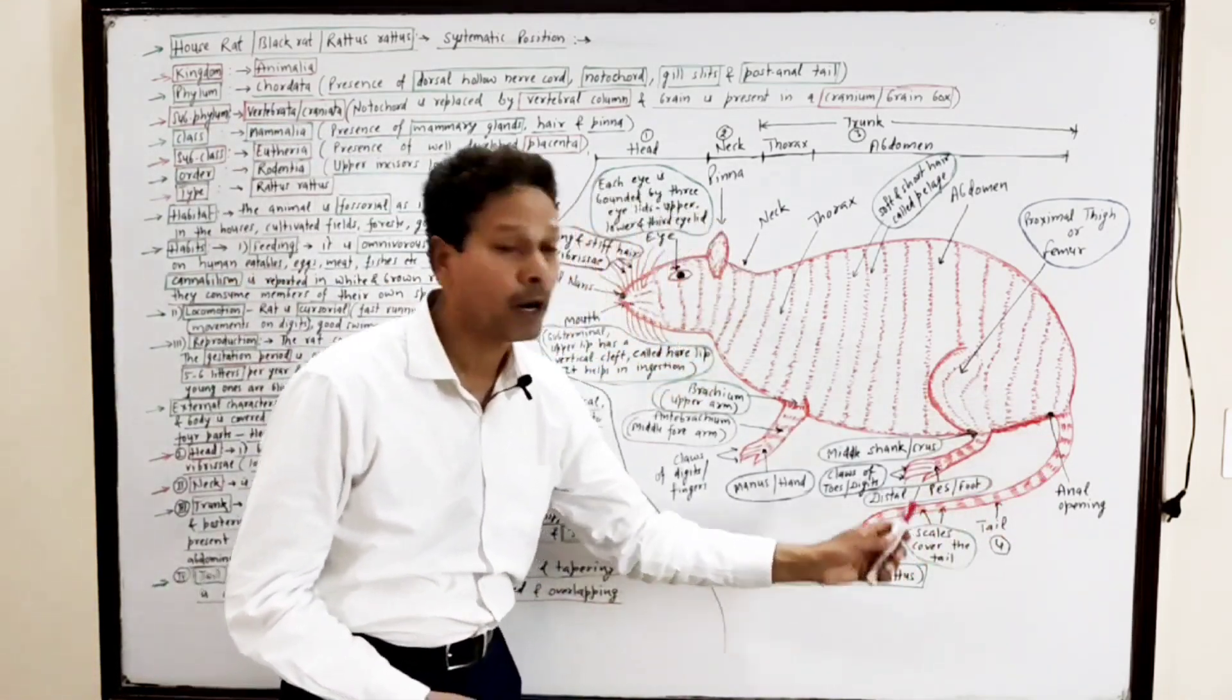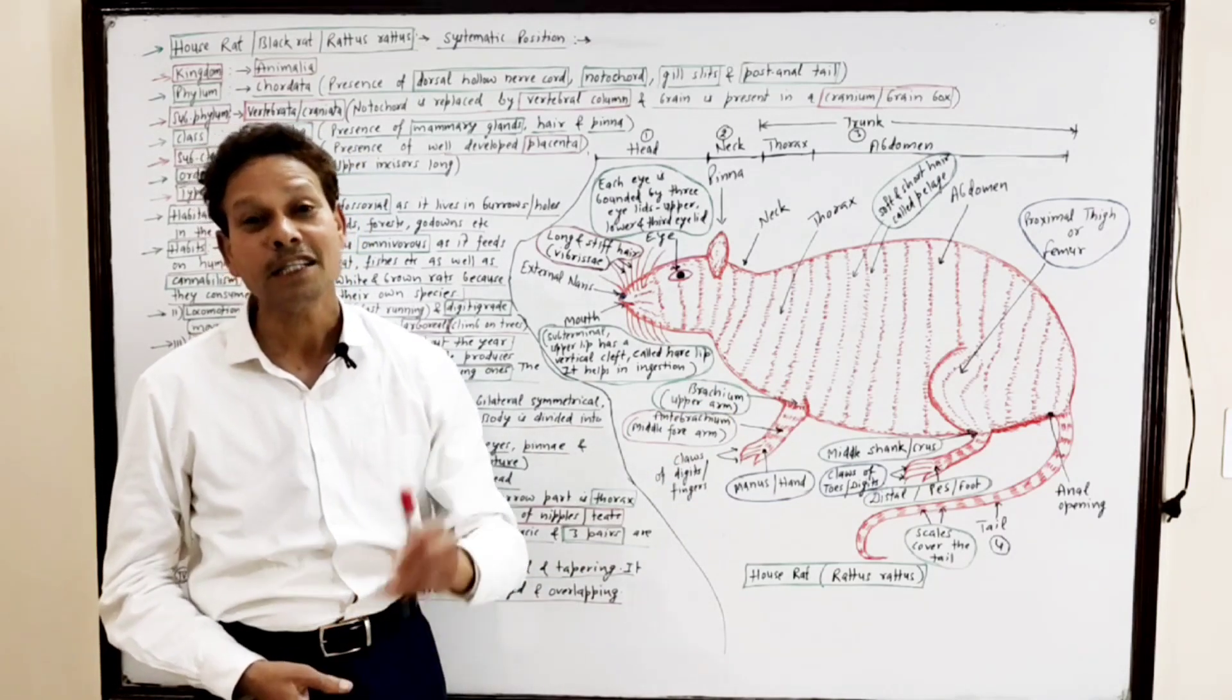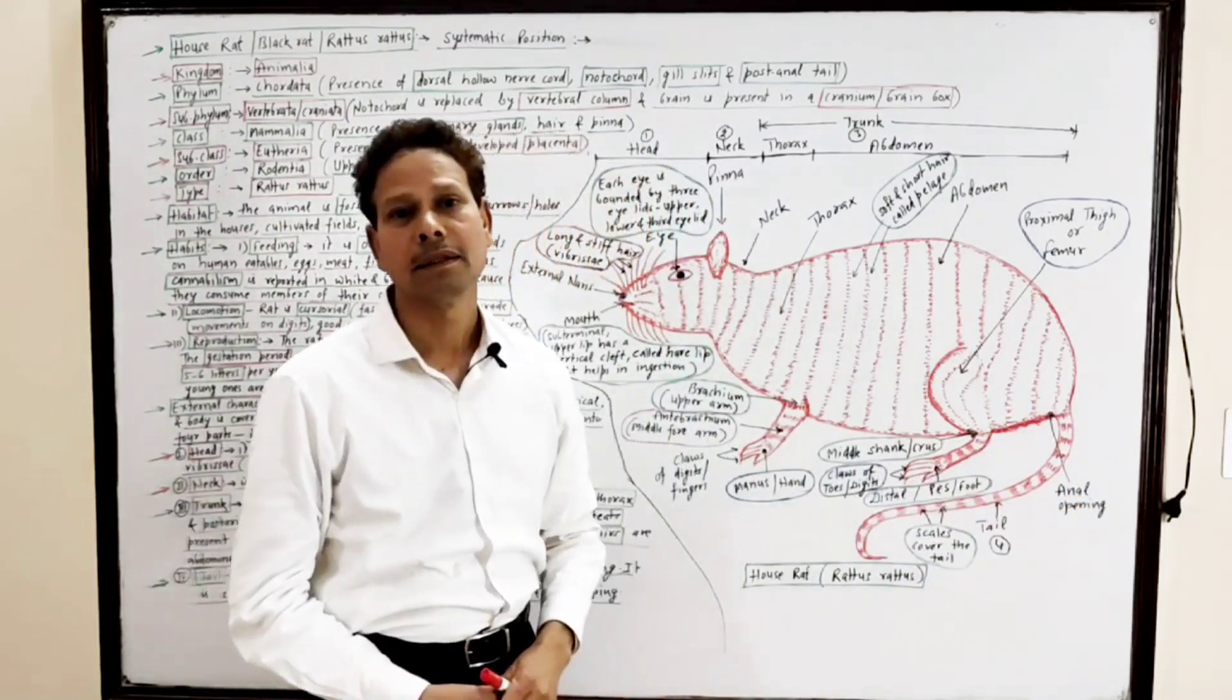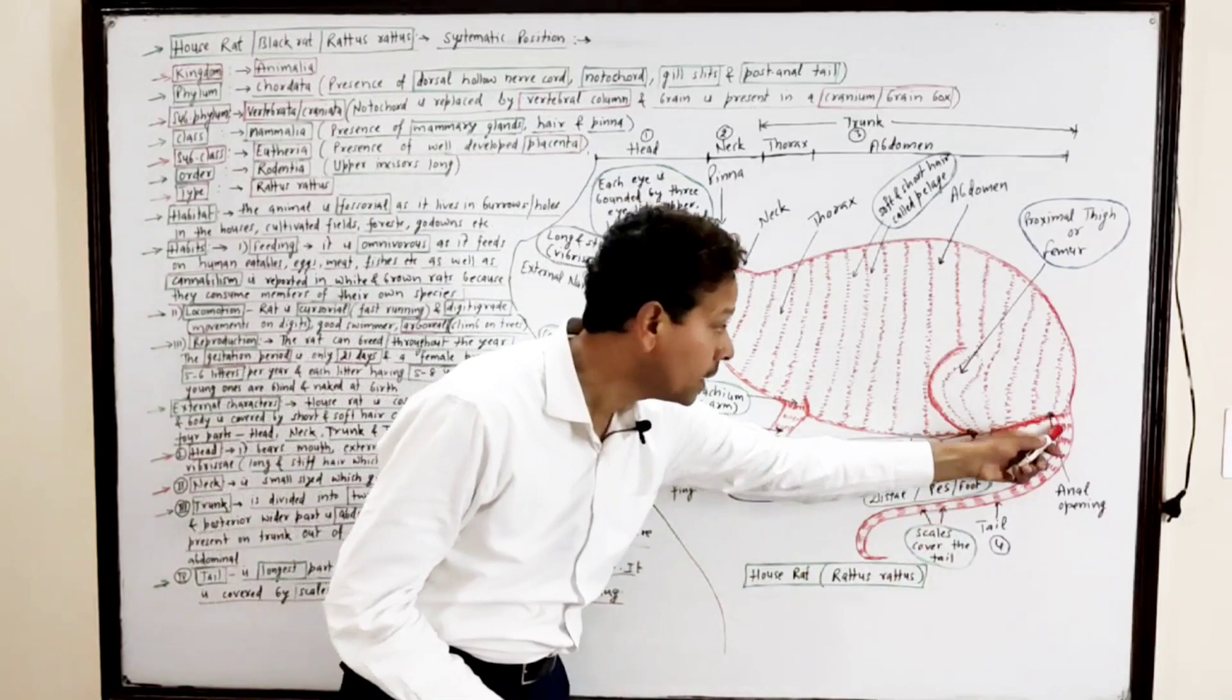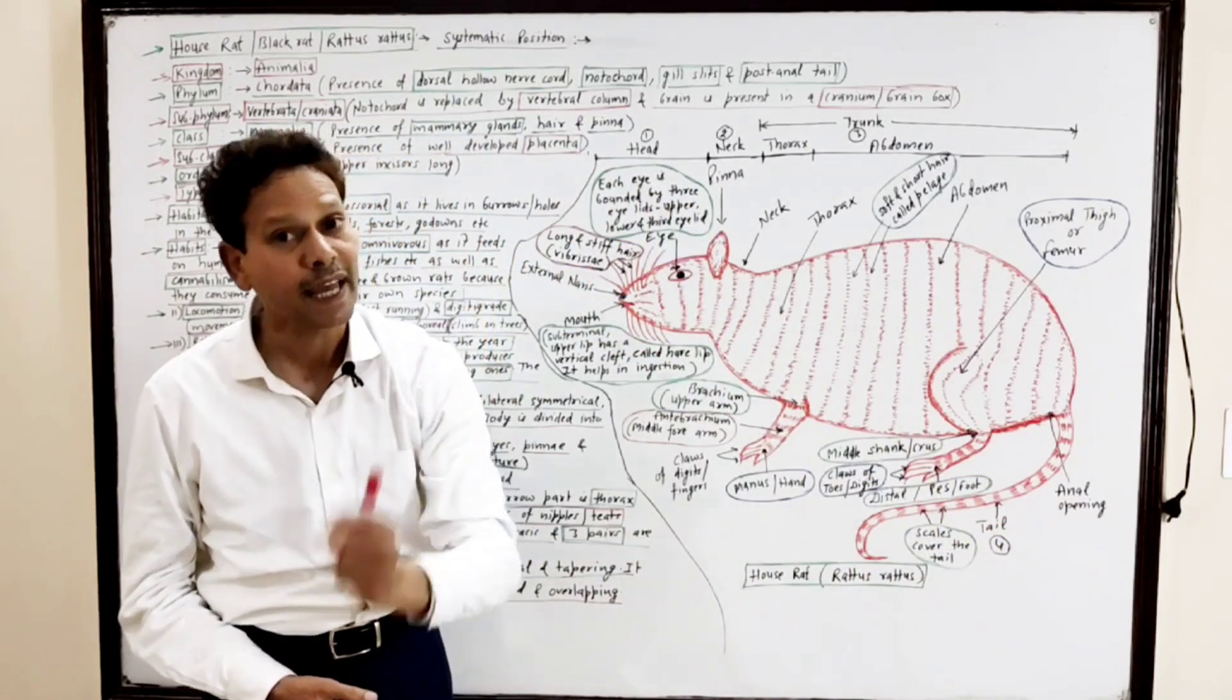This longer cylindrical part is tail. It is post-anal because it lies behind the anus. Note down for competitive exam students: the tail is covered with scales.